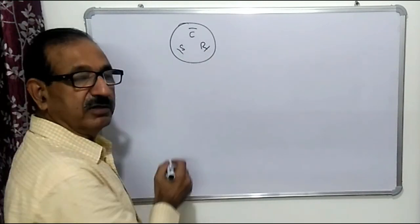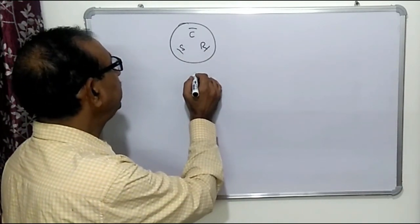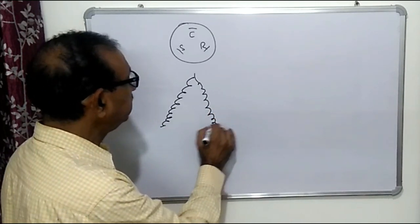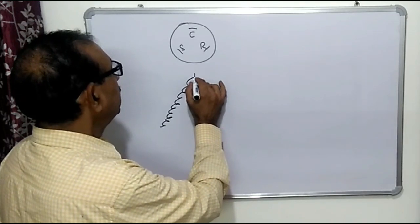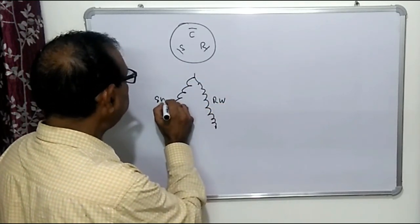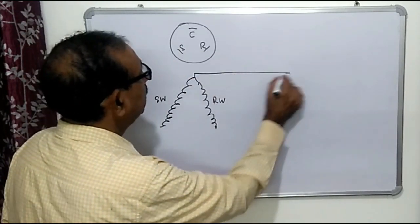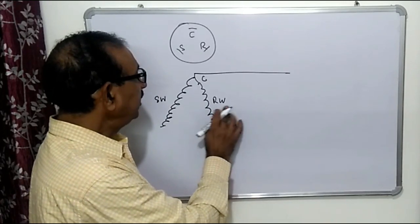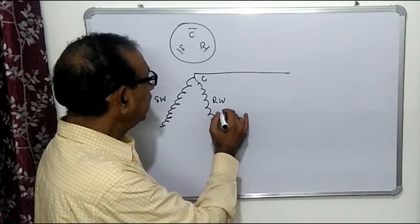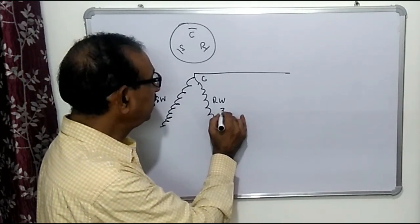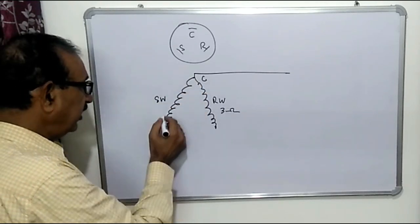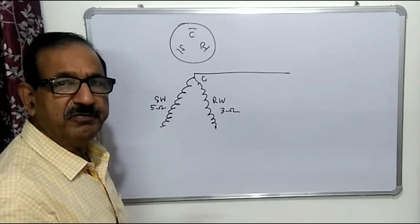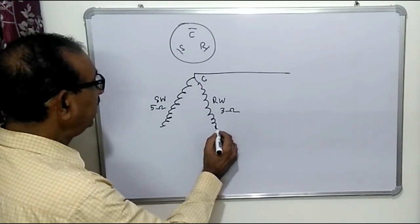In the normal compressor we have two windings, because this is an induction motor. One is the starting winding which has high resistance, and the other is the running winding which has low resistance. We join one end of both windings together, and this point is the common point. Between common and running we will measure low resistance — around 3 ohms — and between common and starting we will get high resistance — around 5 ohms.